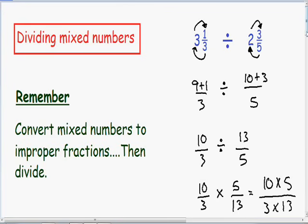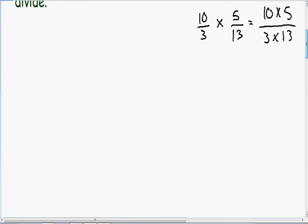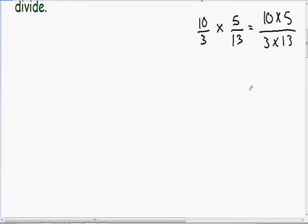And now I'm going to scroll down a little bit just to give me a little more space. And now I'm going to simplify this even further. In our numerator, we have 10 times 5, which is just 50. And in our denominator, we have 3 times 13, which is 39.